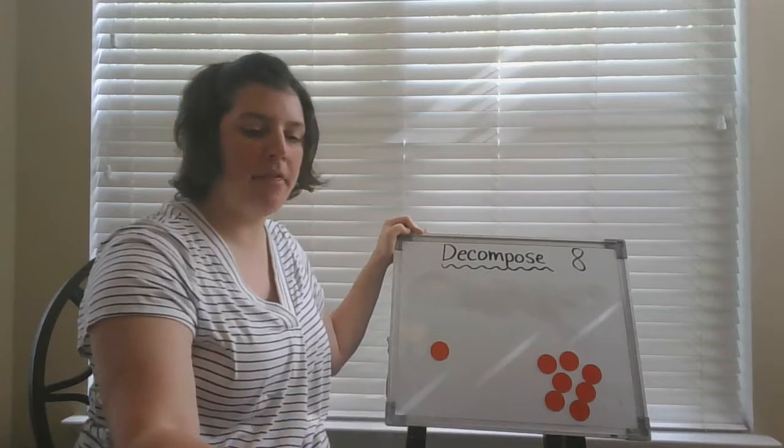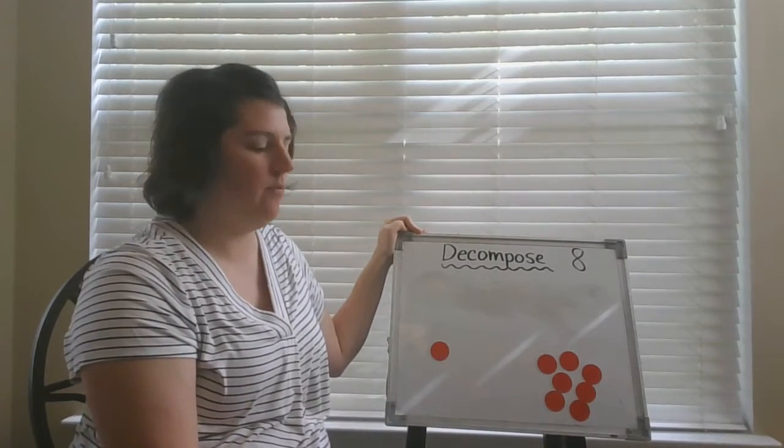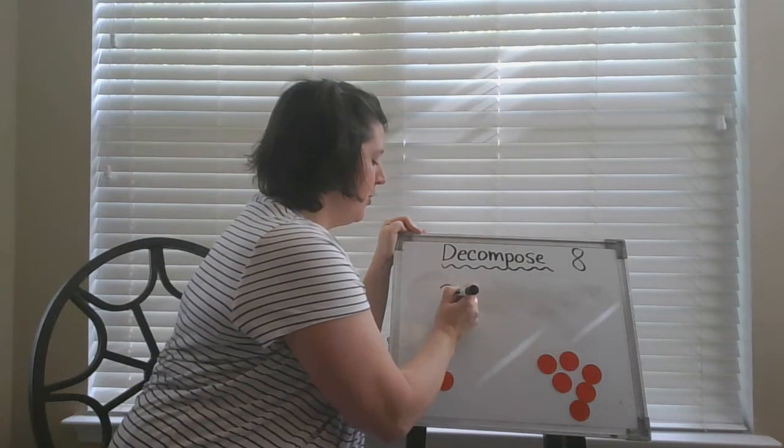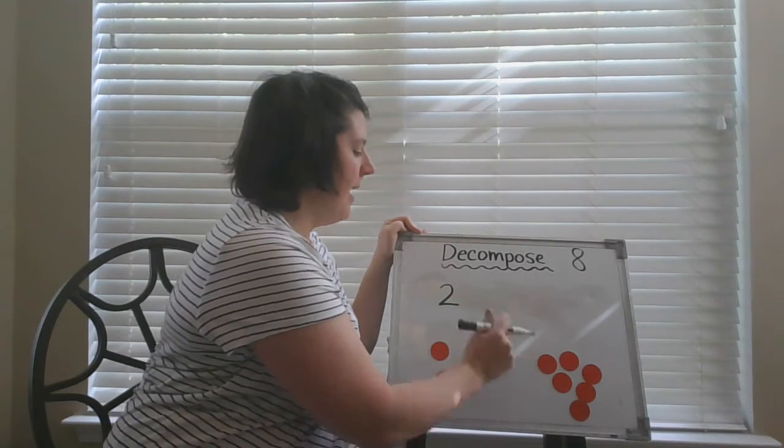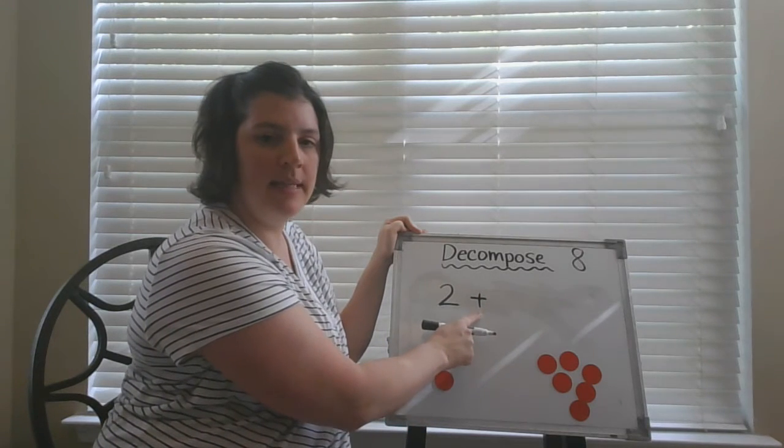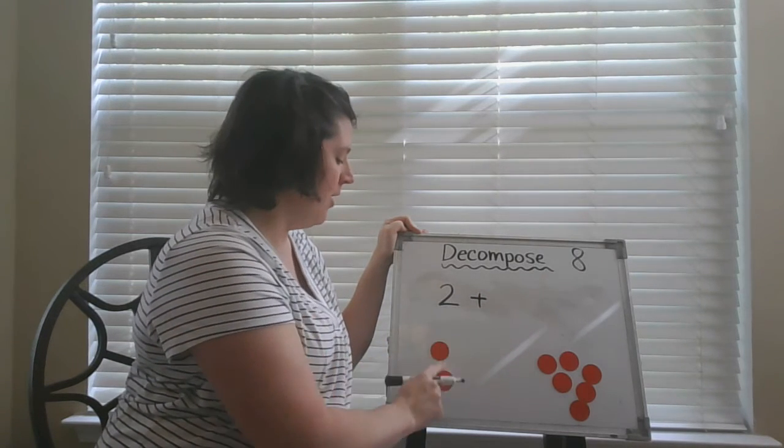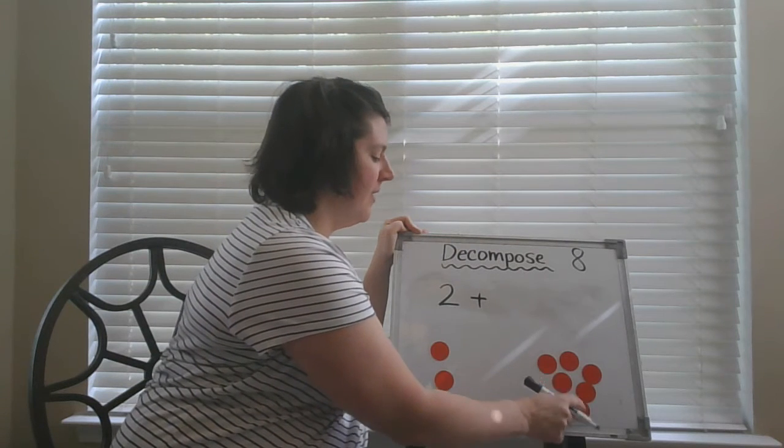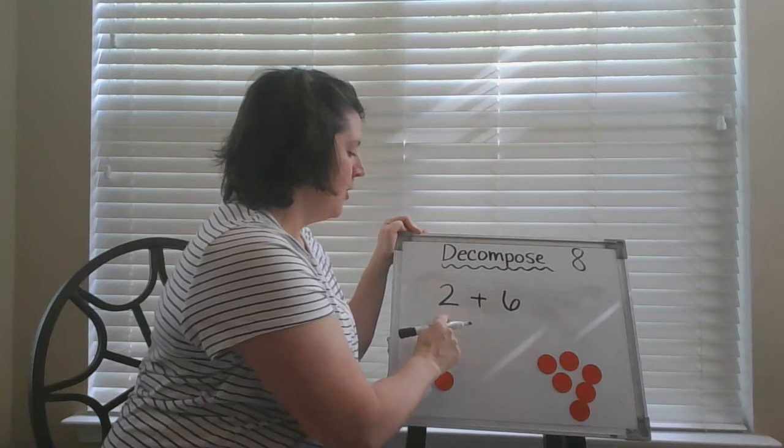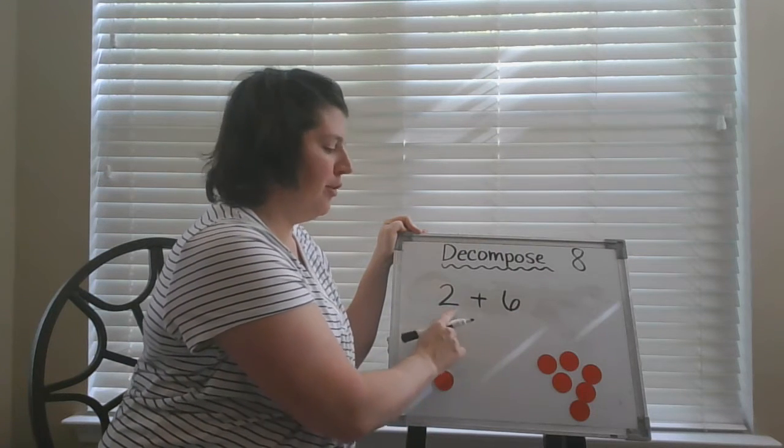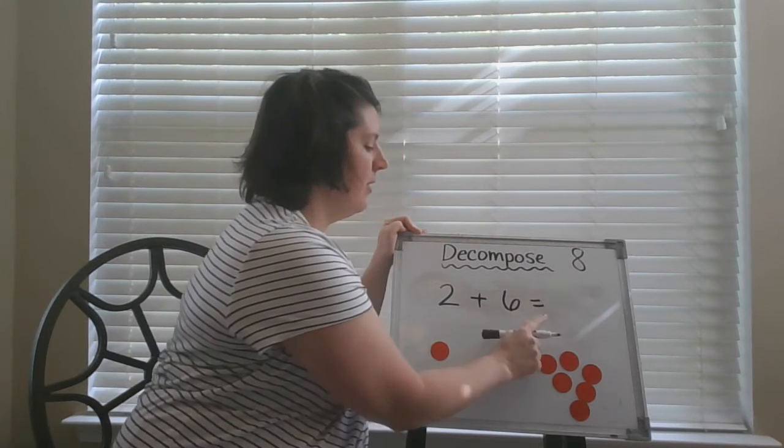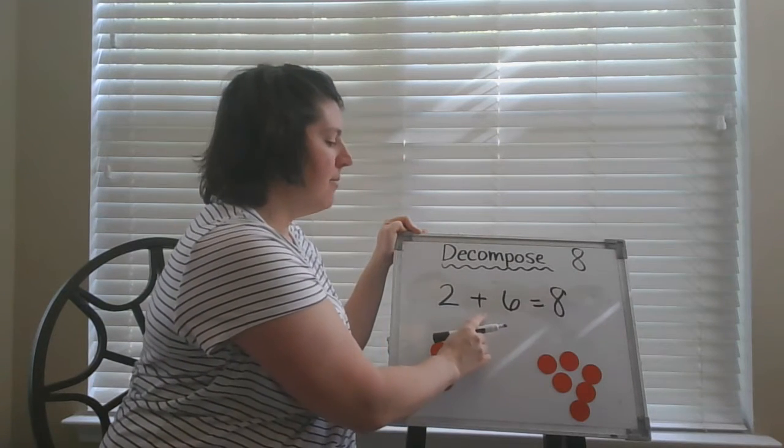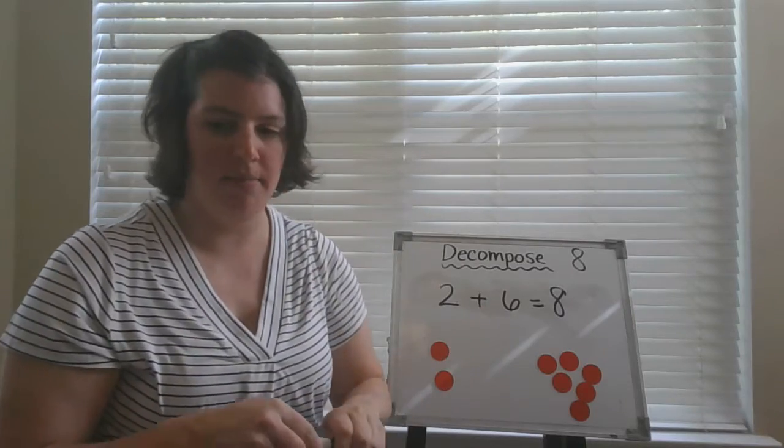Sometimes in math we also use symbols to represent words. Another way we can write this with numbers is to say two plus, this is a symbol that means and or put together. So two and one, two, three, four, five, six, two and six or two plus six equals or is eight. Sometimes we see these symbols to represent words in math.